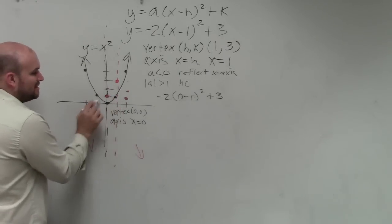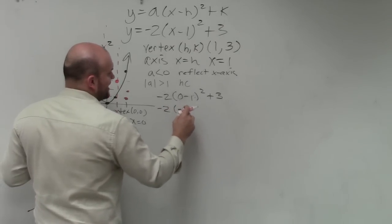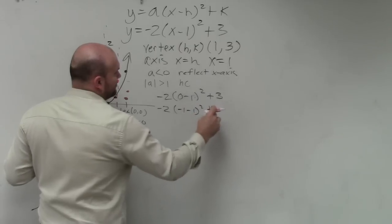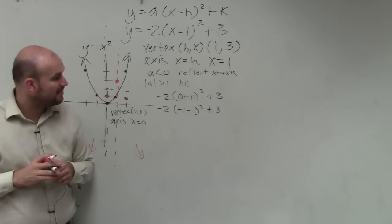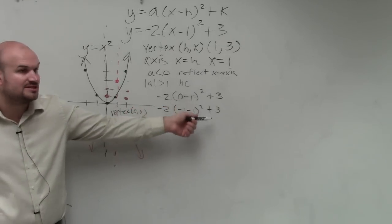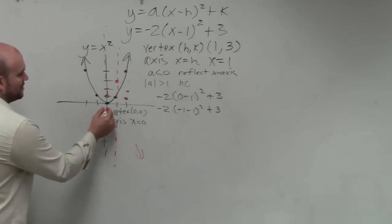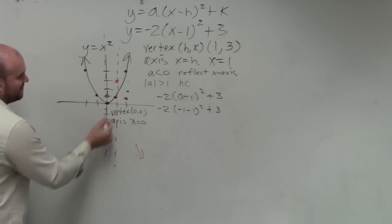So now, let's pick another point. Let's pick negative 1. Negative 2 times negative 1 minus 1 squared plus 3. Negative 1 minus 1 is negative 2. Negative 2 squared is going to be positive 4. Positive 4 times negative 2 is negative 8. Negative 8 plus 3 is negative 5. So 1, 2, 3, 4, 5. So at negative 1, I'm going down to negative 5.